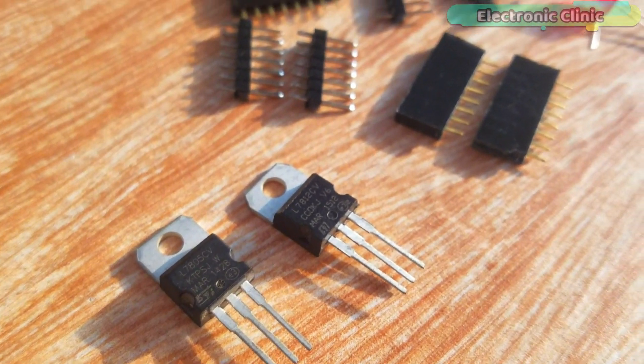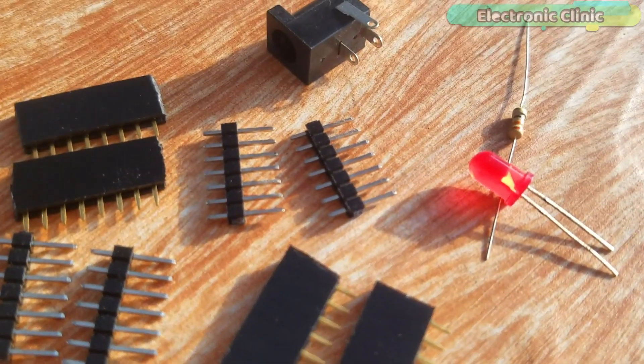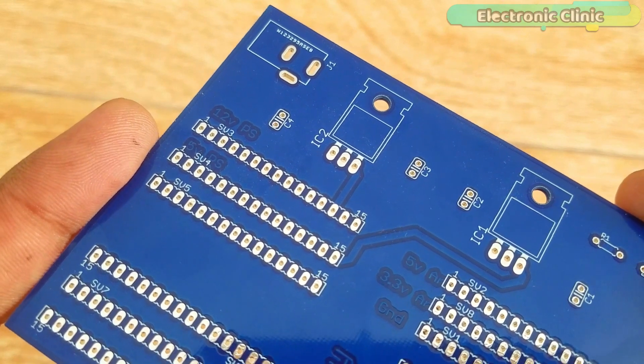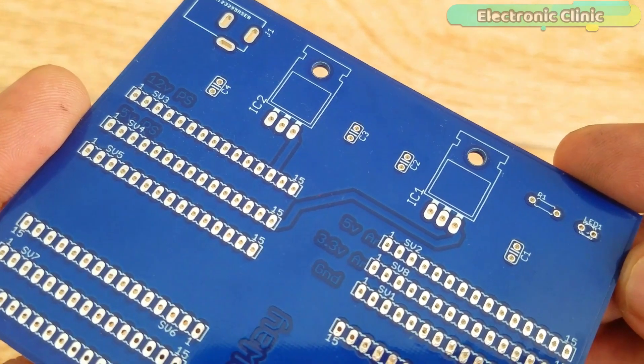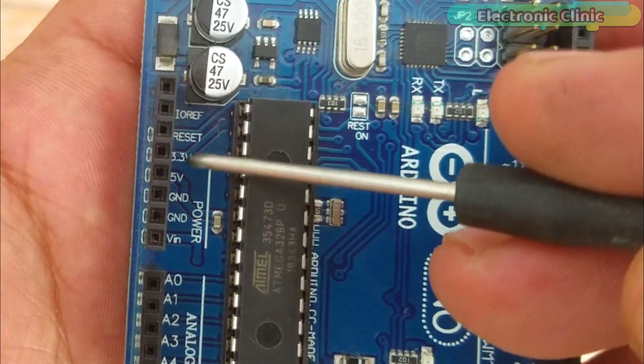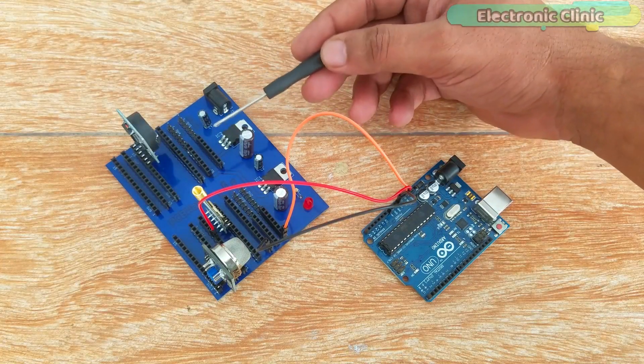The components and tools used in this project can be purchased from Amazon. The components purchase links are given in the description. The most commonly used voltages are 12, 5 and 3.3 volts. The 5 volts and 3.3 volts are already available on the Arduino. Now the question is why I need this power supply board.